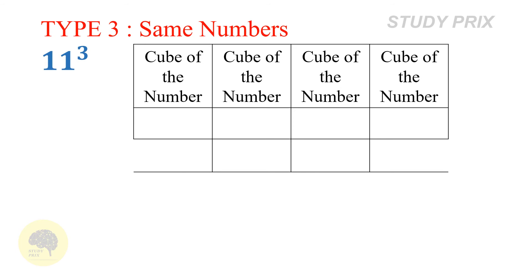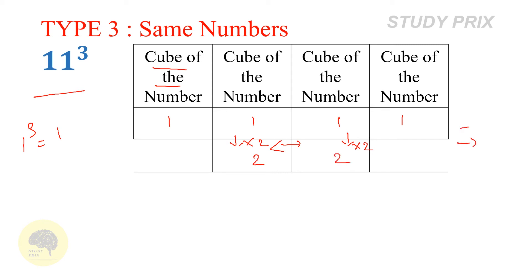Type 3 is same digits — it is the easiest type. The problem is to find the cube of 11. Since both digits are the same, find the cube of 1, which is 1. Fill 1 in all four columns. In the two middle cells, double the upper number: 1 times 2 is 2, and again 1 times 2 is 2. Add the two rows: 1, 1 plus 2 is 3, 1 plus 2 is 3, and 1. So the cube of 11 is 1331.